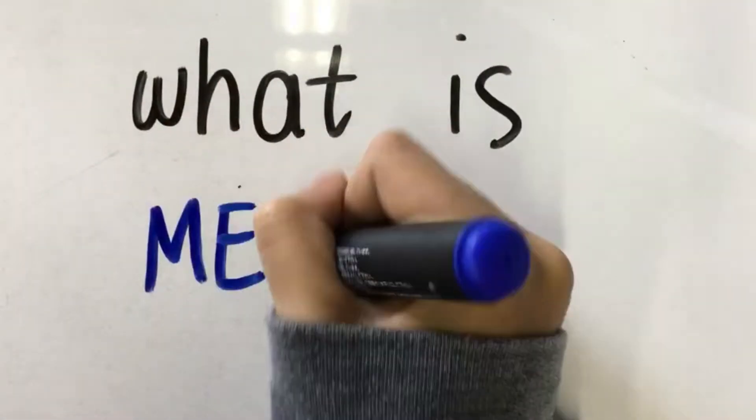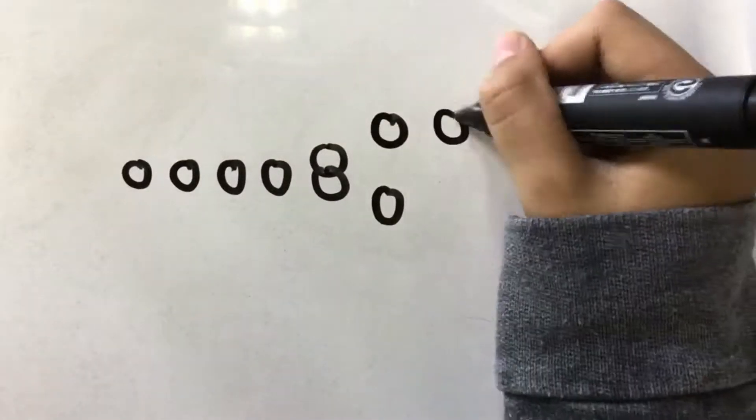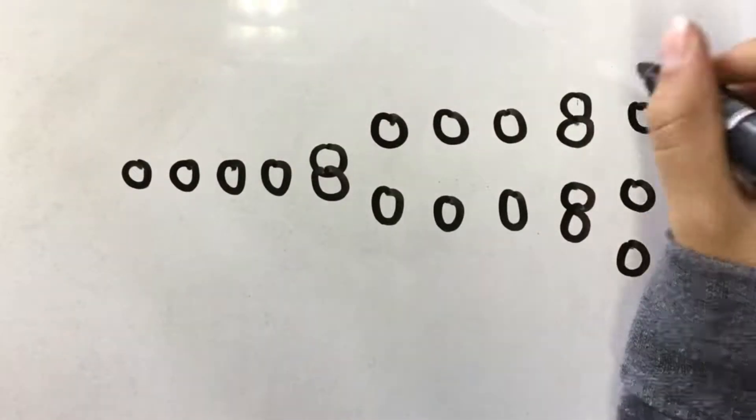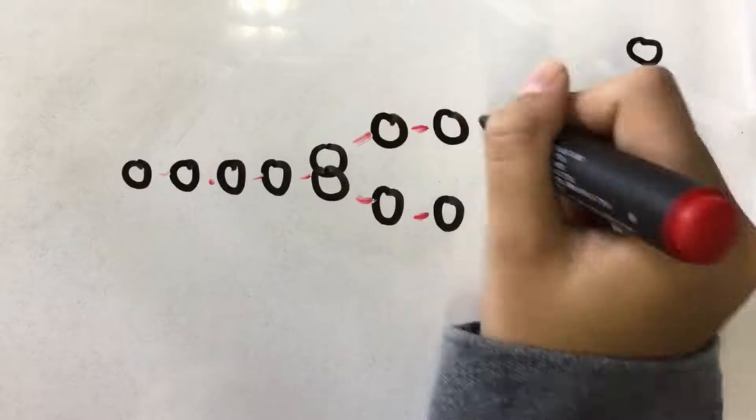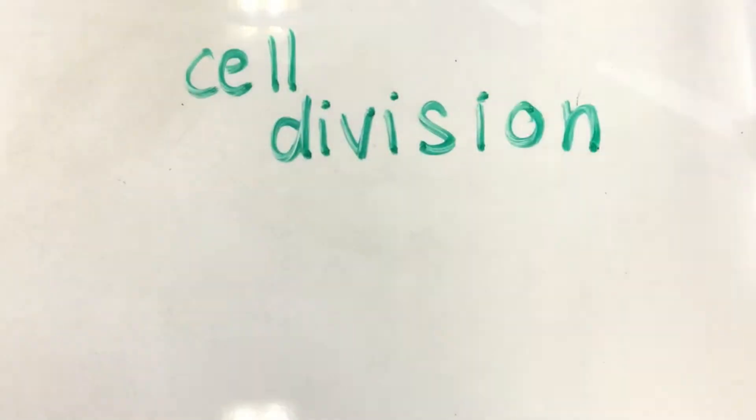What is meiosis? Well, if we were to put it simply, we'd say it was a process of specialized cell division that reduces chromosome numbers by half and creates four haploid cells. These haploid cells would be genetically distinct to each parent.